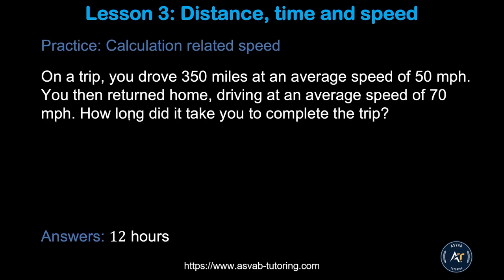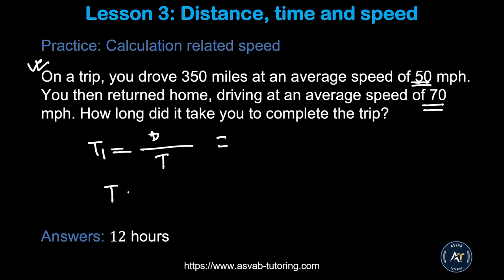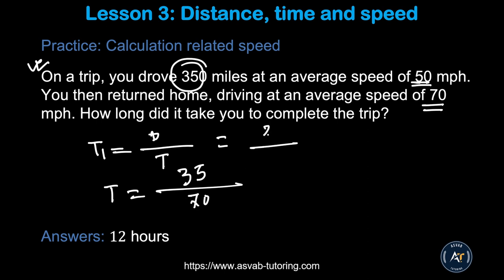Here is a very interesting practice problem — this type of problem has appeared on actual officer candidate tests. Say on one trip you drove 350 miles at an average speed of 50 miles per hour, and when you returned home you drove 70 miles per hour. How long did it take to complete the total trip? You find two times: T1 is distance over rate, so 350 divided by 50; T2 is 350 divided by 70. Find those, add them up — that gives you 12 hours total.